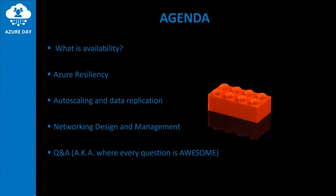To start on the agenda today, first of all we will look at what availability and resiliency in Azure really is. We will also look into auto scaling and data replication and how you can foresee high availability and resiliency on the networking level. We will also show some short demos, and before closing off we hope we still have some time for a Q&A where we would love to answer your questions. Otherwise, as Carl and I already said, you can always contact us through Twitter.